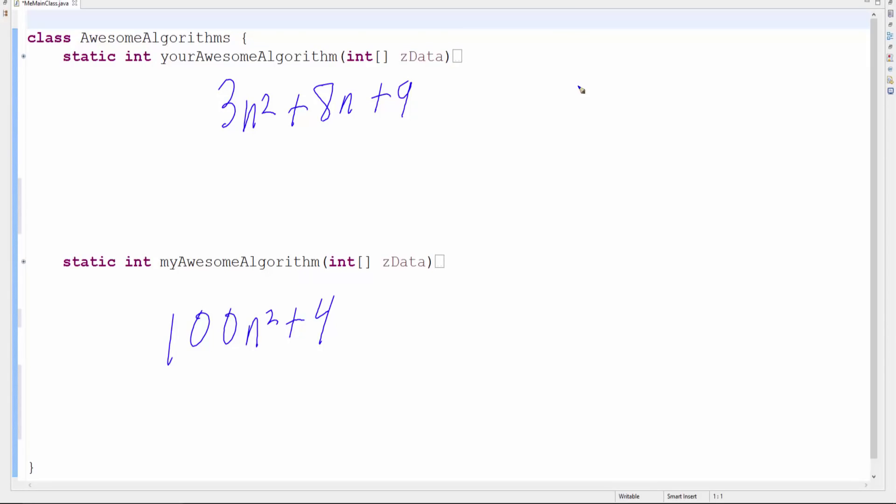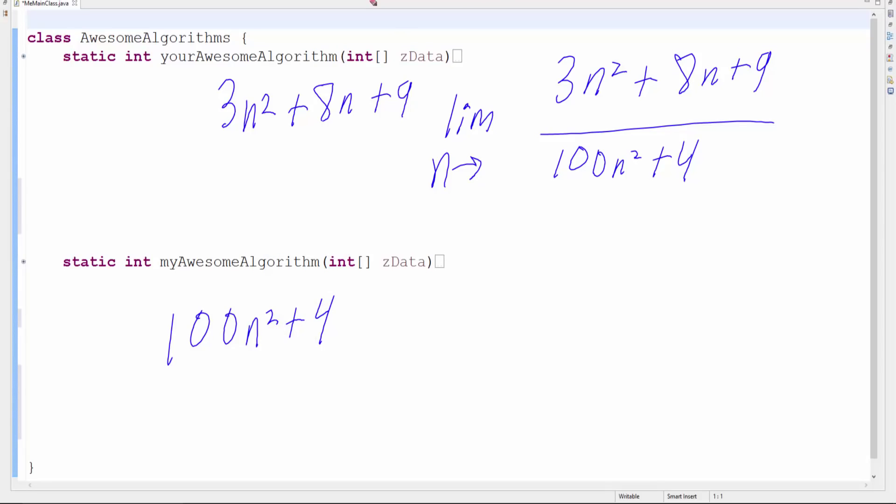Let me show you how we can compare this mathematically. We write them as ratios, meaning as a fraction: (3n² + 8n + 9) over (100n² + 4). And it doesn't matter if my function's on the top or your function's on the top. I'll explain that in a bit. And now we've just got to figure out, as n gets really big, n approaches infinity, which one of these functions is going to dominate. We call this a limit in calculus.